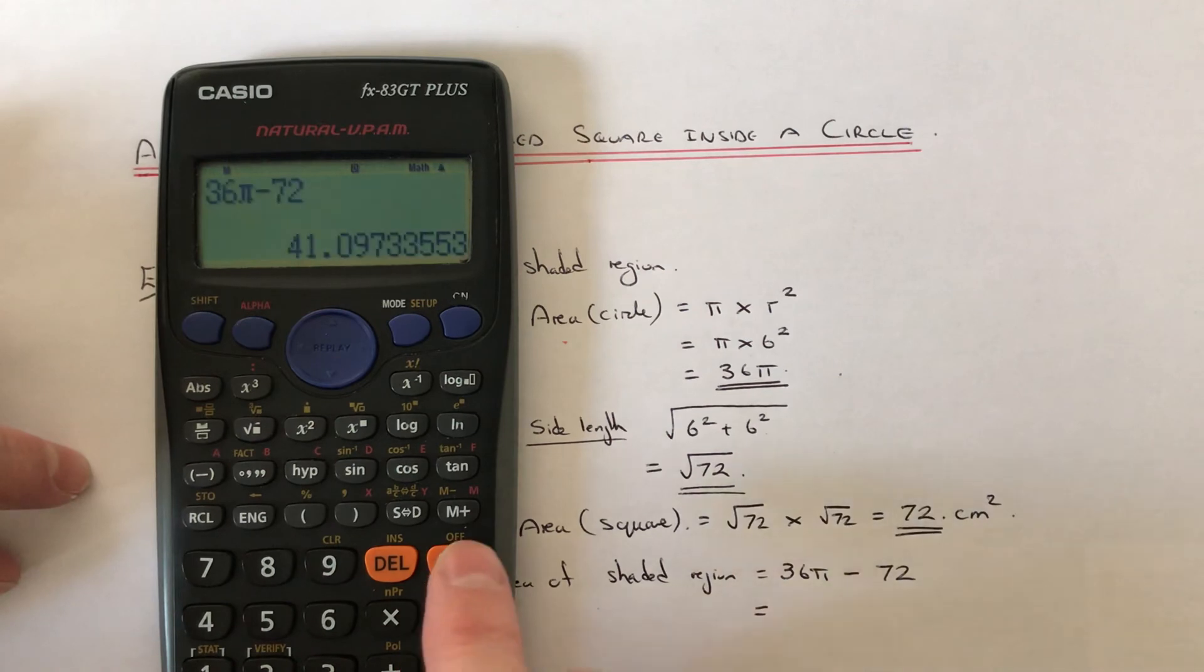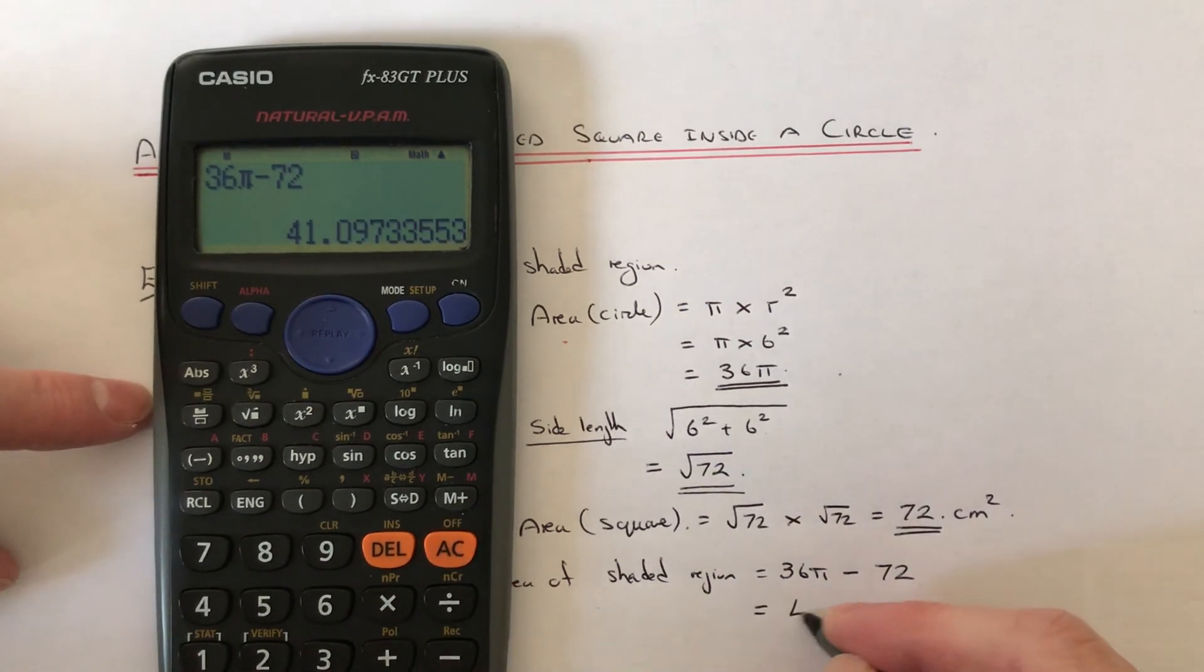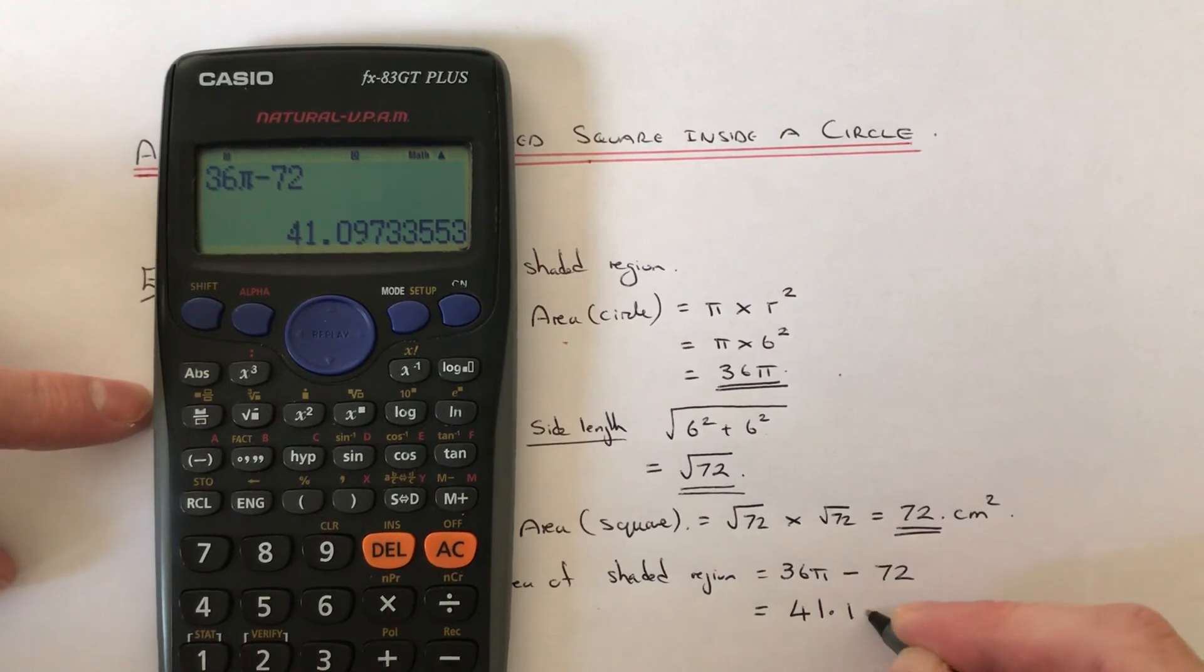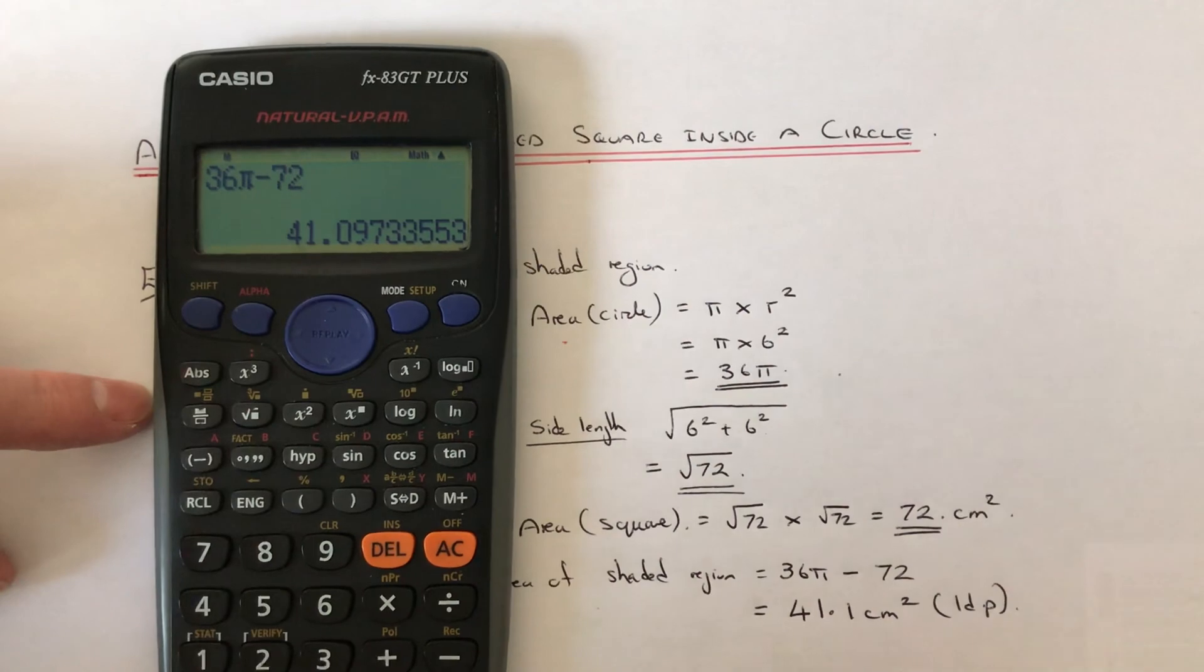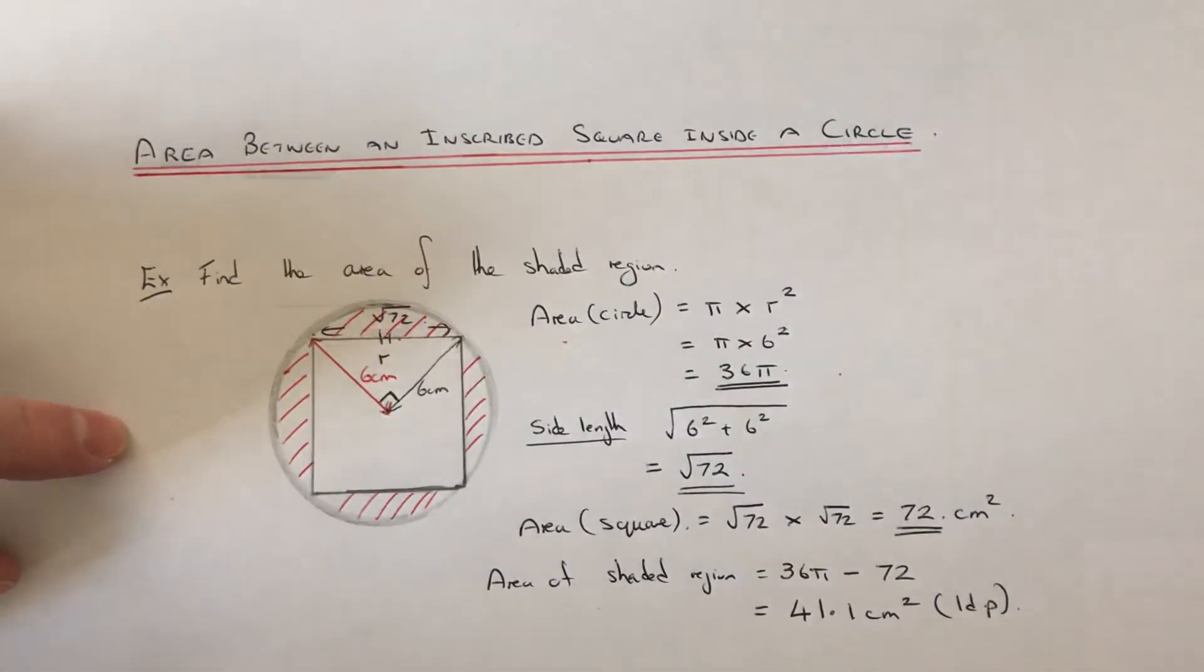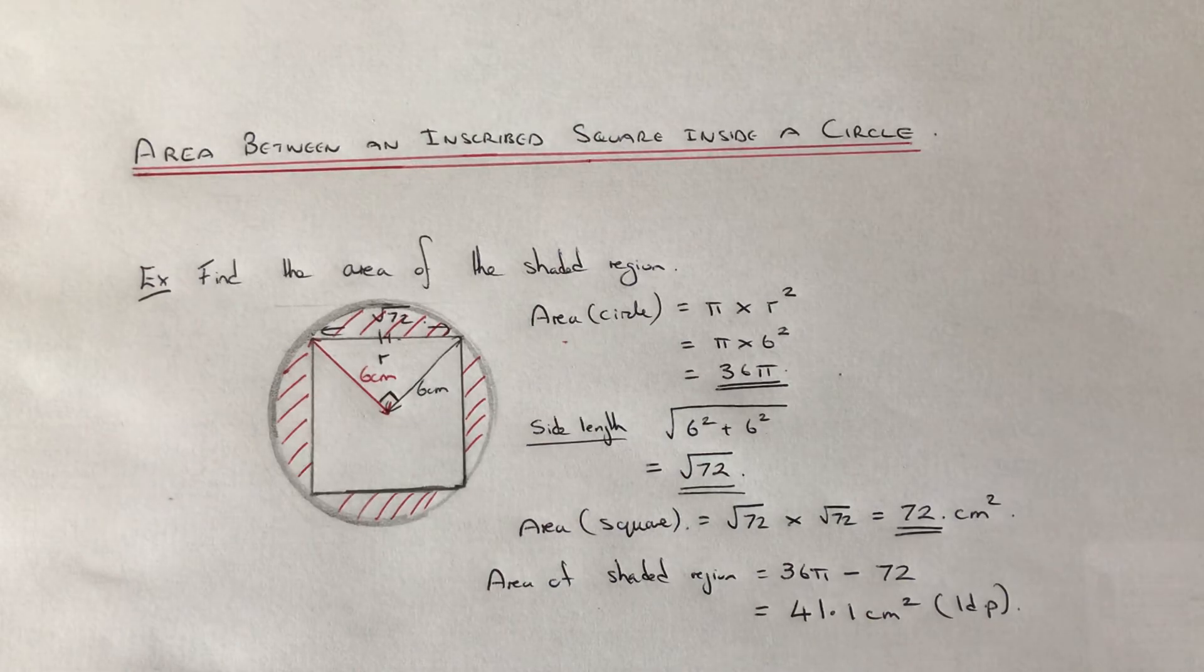That gives us 41.1 centimeters squared to one decimal place. Make sure you like and subscribe. See you next time for another maths video. Bye bye.